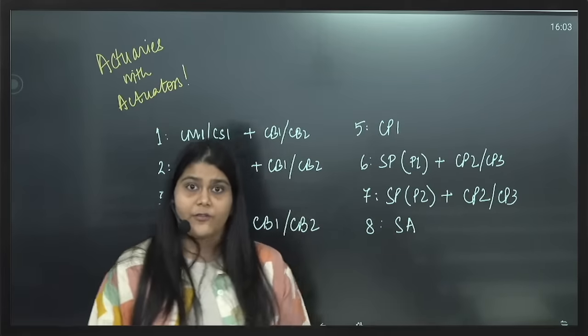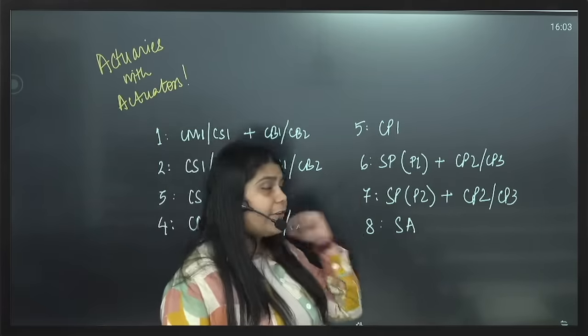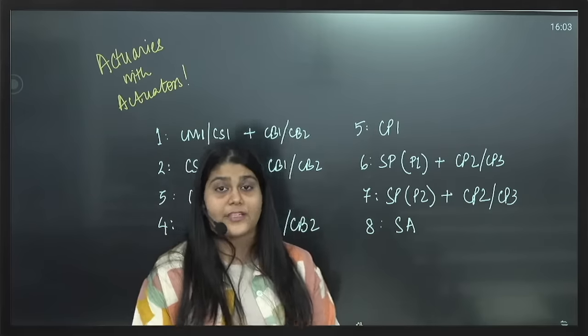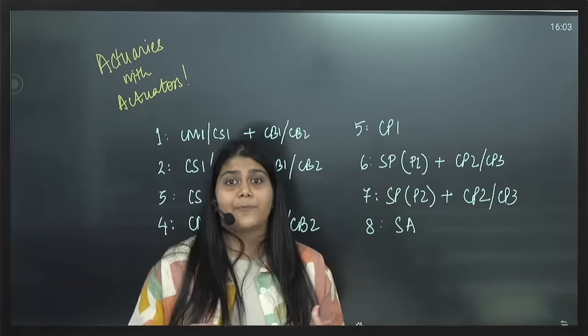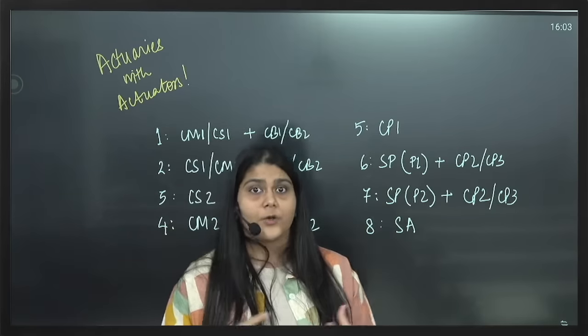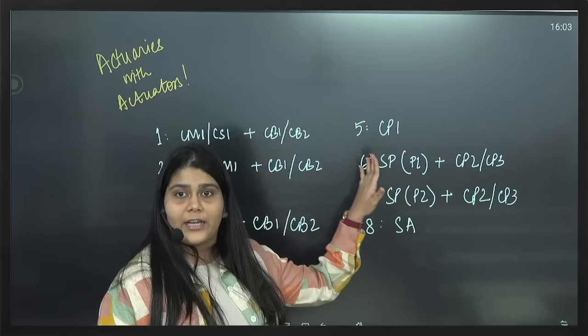The next half of the examinations. Fifth diet actually you can go for CP1 which is actuarial practice. Since this paper's content is pretty humongous we would like to leave it solo.